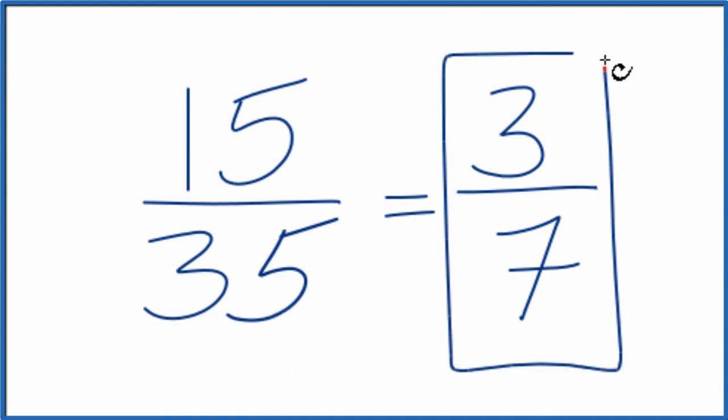We can't reduce 3 7ths any further. These are equivalent fractions, so if you divided 15 by 35 or 3 by 7, you'd get the same answer.